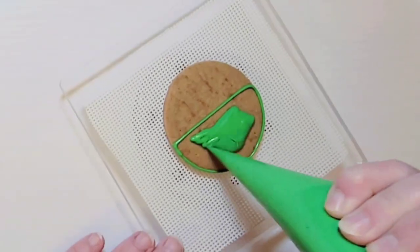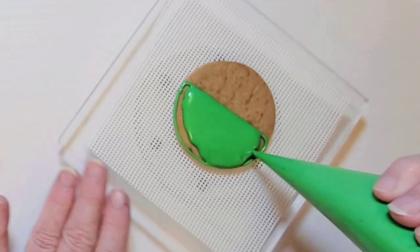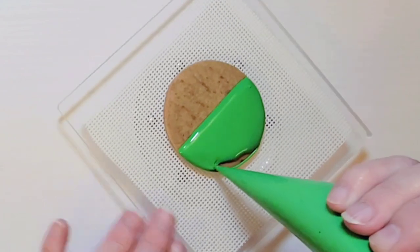Using a round cookie, outline the bottom half and fill it in with the green royal icing and about a 15 second consistency. This is going to be our football field.